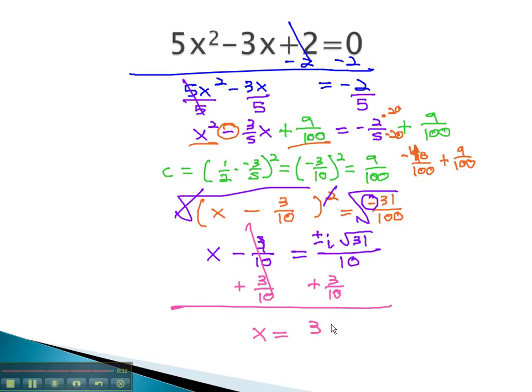And because we already have a common denominator, we can write our final answer as (3 ± i√31)/10. Simplify what we can when we can't take the root.